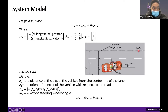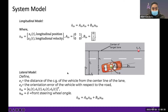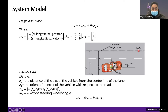Now we discuss the system model. For the longitudinal model, the states are longitudinal position and longitudinal velocity. For the lateral model, we use errors E1 and E2: E1 is the distance of the center of gravity from the center of the target lane (position error), and E2 is the orientation error where psi is the orientation angle. The states for the lateral model are E1, E1-dot, E2, and E2-dot, with the input being the front steering wheel angle. For the longitudinal model, the input UL is the force in the acceleration term.